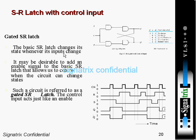The basic SR latch changes its state whenever its input changes — whenever there is a change in S, clock, or R, you get an output. It may be desirable to add an enable signal to the basic SR latch to control when the circuit can change state. Such a circuit is referred to as a gated SR latch, and the control input acts just like an enable signal.